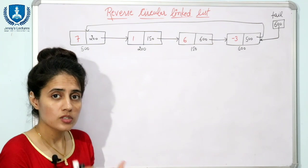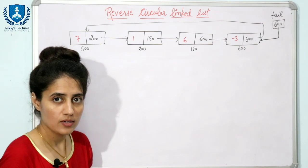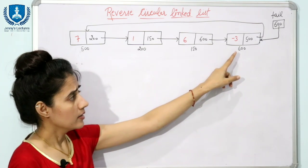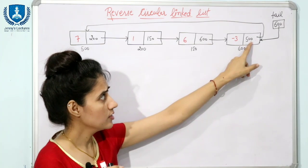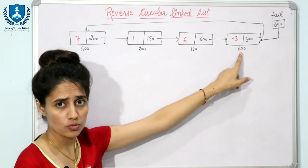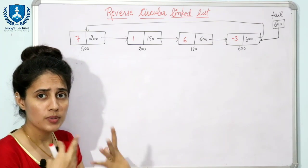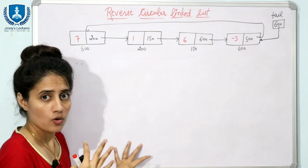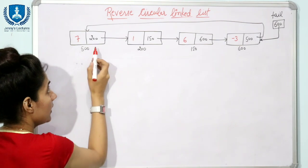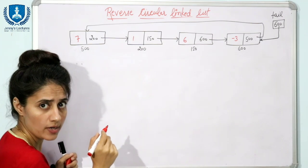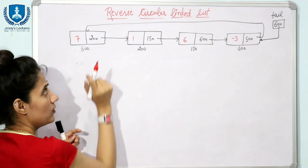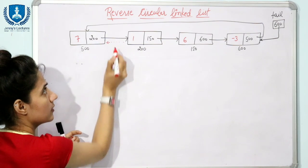We have discussed how to reverse a singly linked list. Now, suppose we have four nodes in a circular linked list where the last node contains the address of the first node, and we are maintaining only the tail pointer. Reversing doesn't mean swapping nodes — we are going to reverse the links. Each node currently contains the address of the next node, but after reversing, each node should contain the address of the previous node.